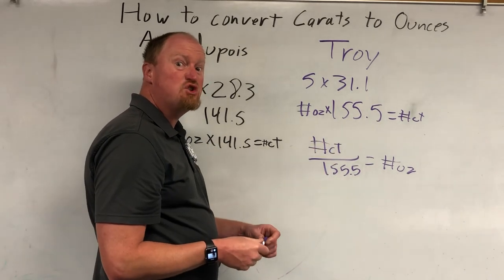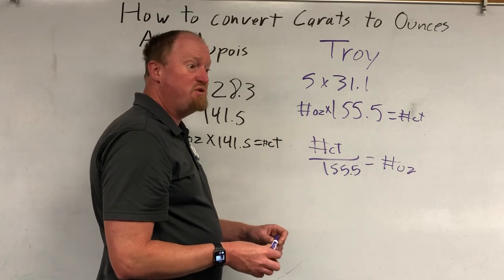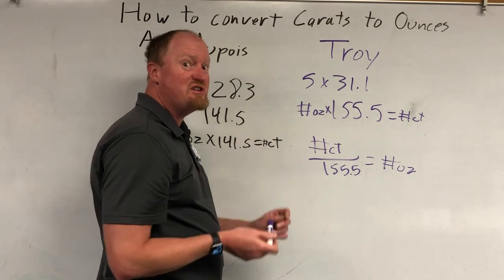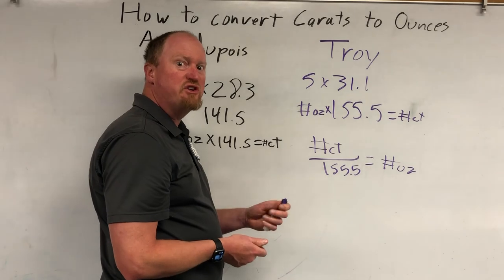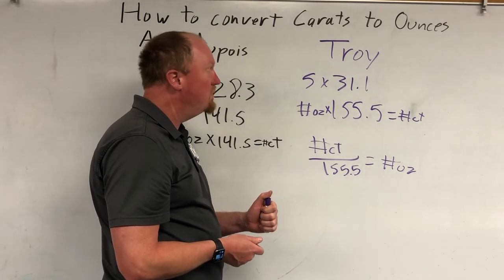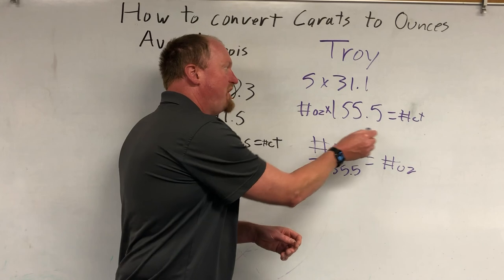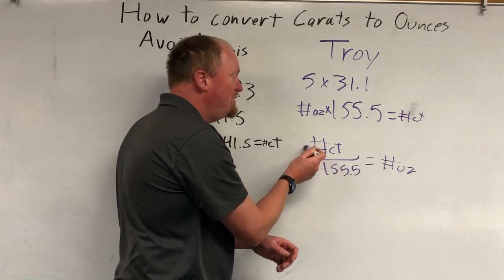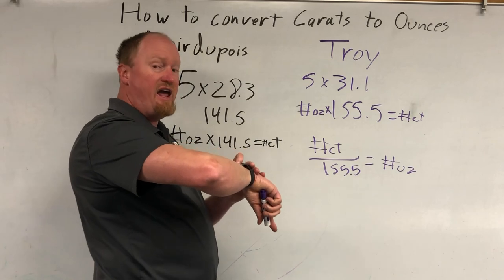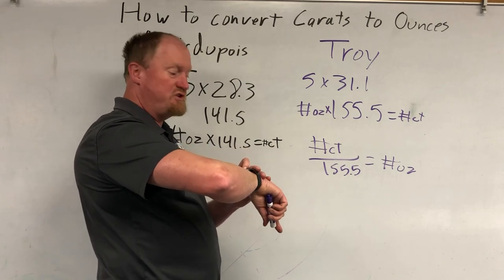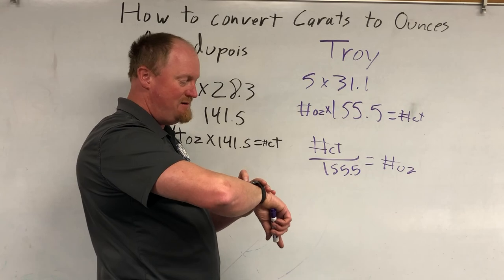It should be listed in troy ounces — it should almost always be listed. So unless someone's trying to scam you and sell you something smaller, your gold will be measured in troy ounces. Number of ounces times 155.5 is the number of carats. Number of carats divided by 155.5 is the number of ounces. I hope you've enjoyed this video. Have a nice day. Sorry I'm a little rusty. Bye-bye.